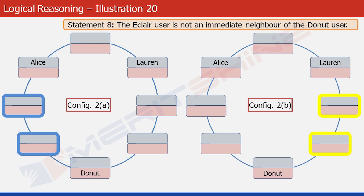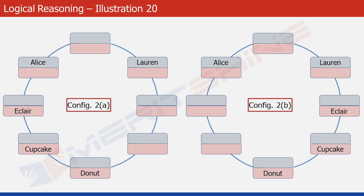Statement 8 tells us that the Eclair user is not an immediate neighbor of the Donut user. So it's clear that the Cupcake user would be the neighbor of the Donut user. Let's fill it up accordingly. We can see that this doesn't violate any condition in either of the two cases. So now we have two parts of Configuration 2 in front of us, and only one of them has to be correct.